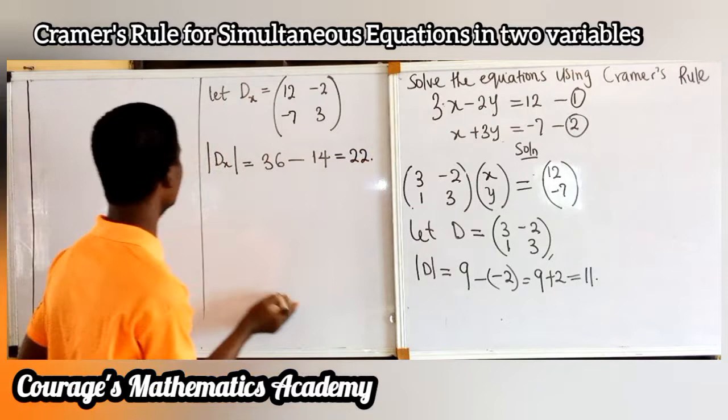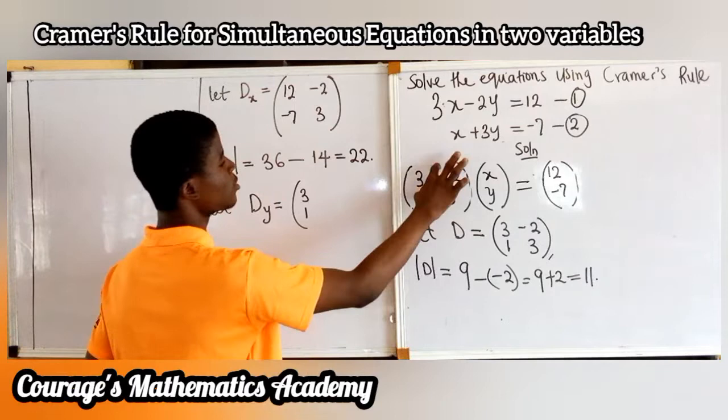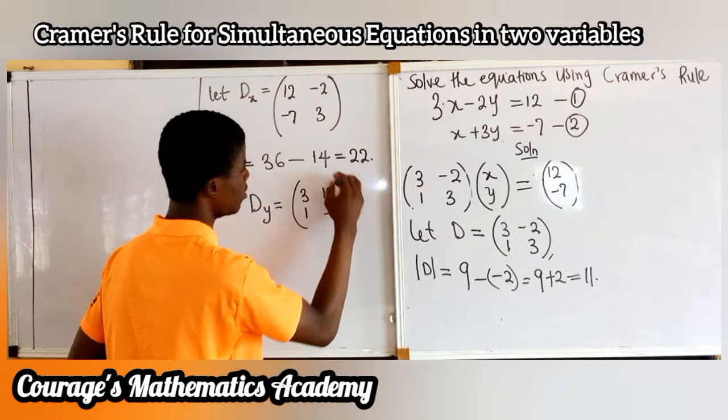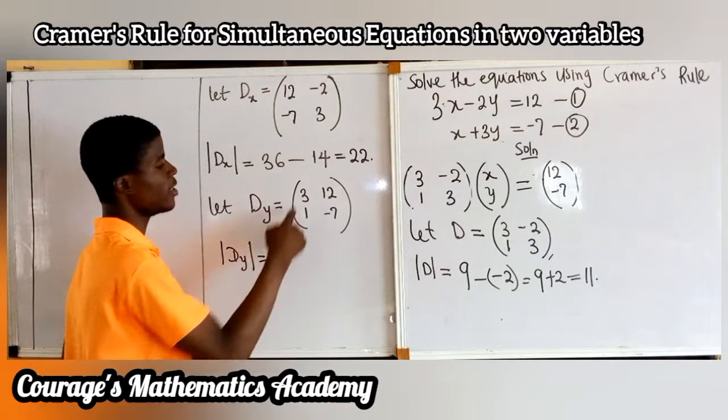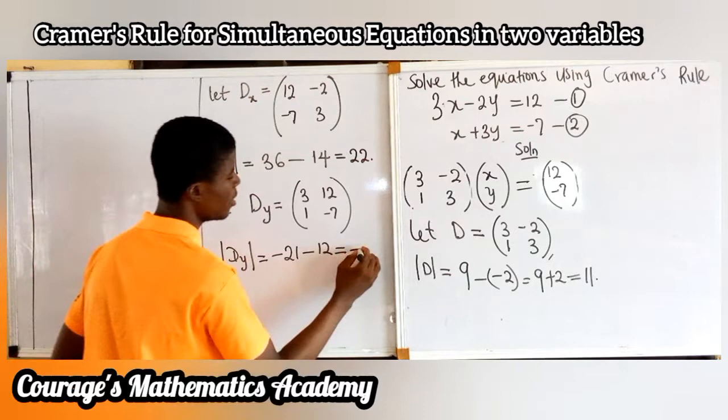Then let Dy be equal to this matrix: 3, 1 for the x column, and in place of the y column I write 12 and minus 7. The determinant of Dy: 3 times minus 7 is minus 21, minus 1 times 12 is 12. So minus 21 minus 12 is minus 33.